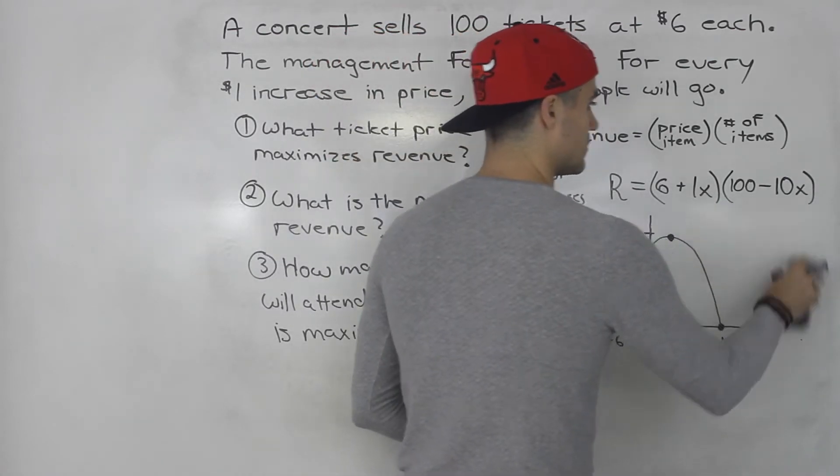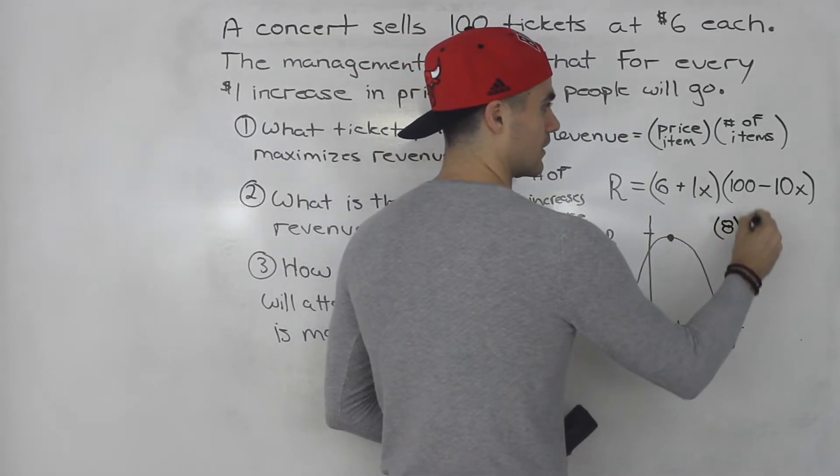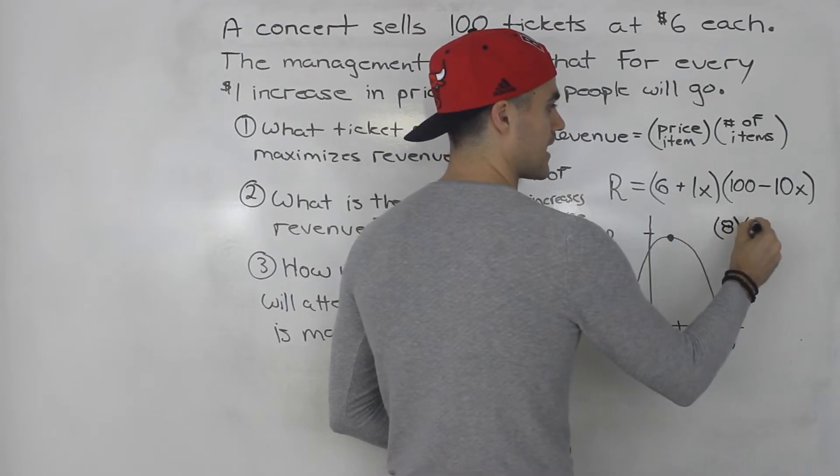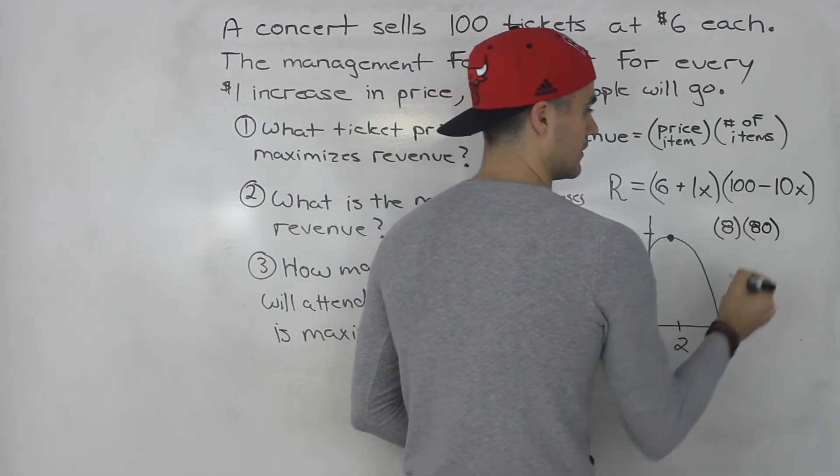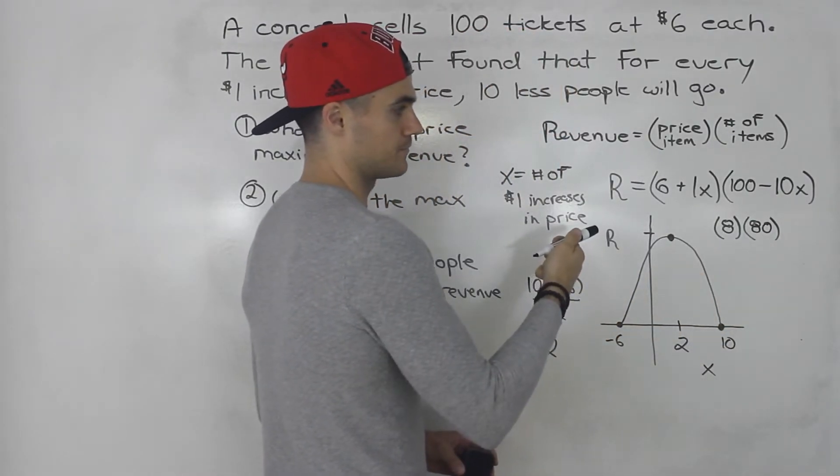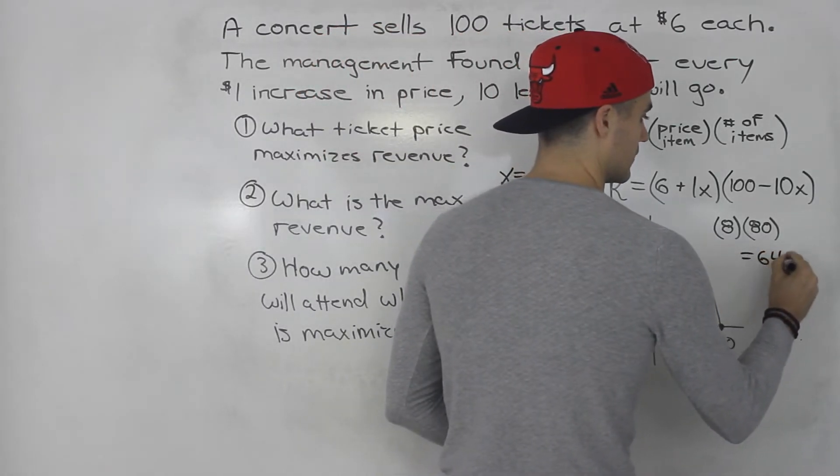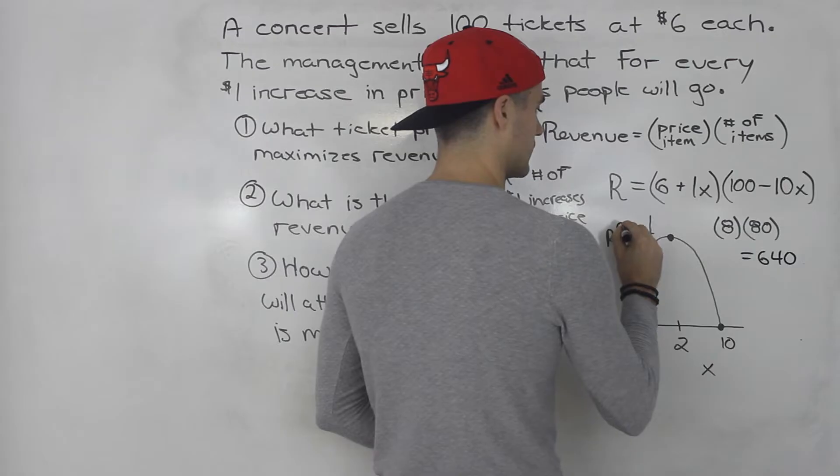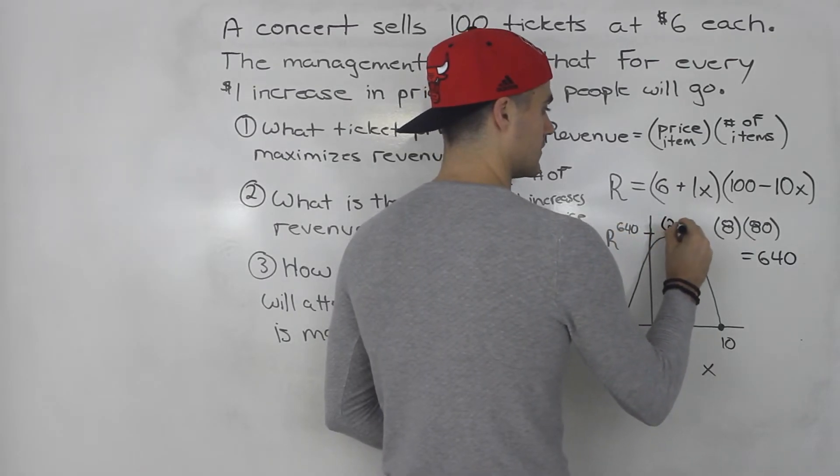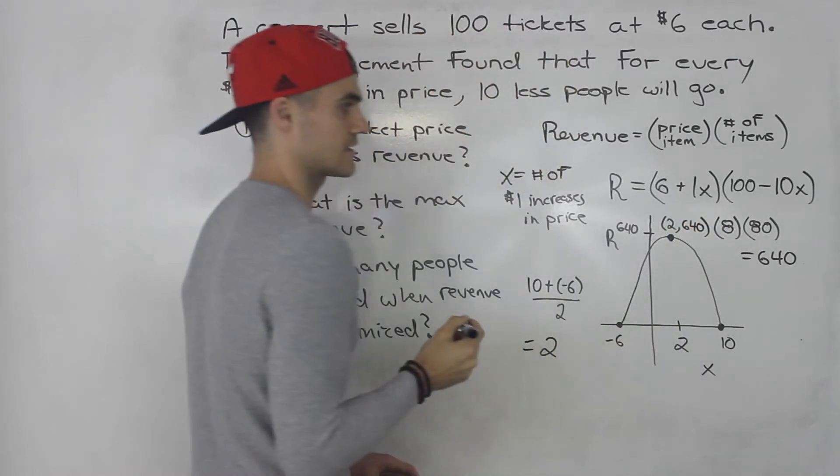Then we can just plug in 2 into the revenue function for x to get that maximum revenue. When we do that, we would end up having 8 in this bracket and 80 in that bracket. 80 times 8 gives us 640. So we know that this vertex here has a coordinate 2 and 640.